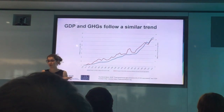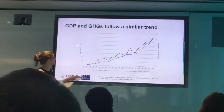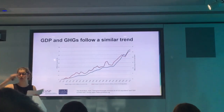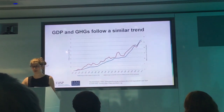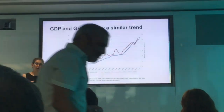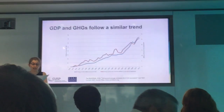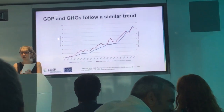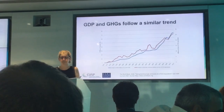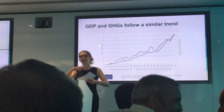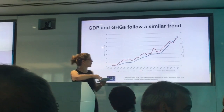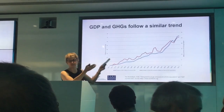What this graph shows is that the two trends have historically followed a very similar path. As GDP increases, so do the carbon emissions and greenhouse gas emissions generally. How closely these two lines match and follow the same trend tells us something important about the relationship between these two factors. If this relationship is weakening over time, then we can say that the two factors are decoupling — the lines become less closely matched over time.